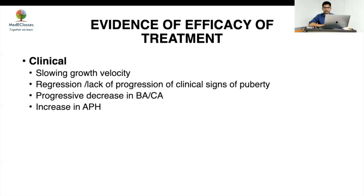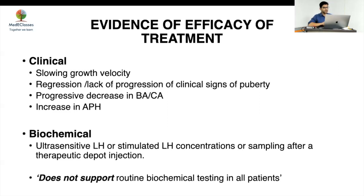Monitoring is the most important part. Clinically, look for slowing of growth velocity and regression or lack of progression of pubertal staging — it may become static or regress, but should not progress. The advanced bone age should stabilize relative to chronological age, decreasing the BA/CA ratio and increasing adult predicted height. Height velocity is the most reliable combined marker. Biochemically, ultra-sensitive LH or stimulated LH may be done, but the guidelines clearly state that unsuppressed LH levels do not necessarily mean puberty is not suppressed, and routine biochemical testing of all patients is not recommended.